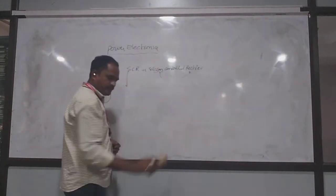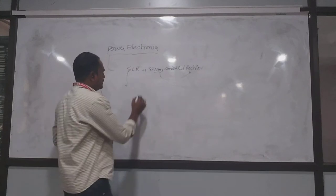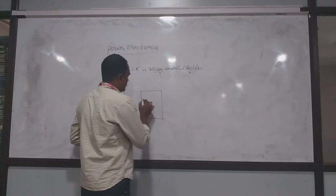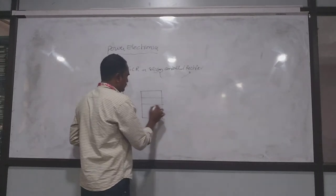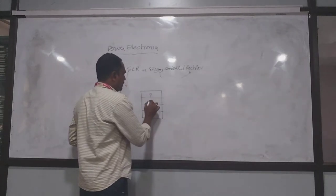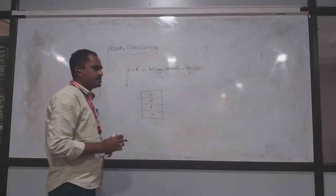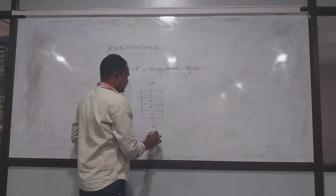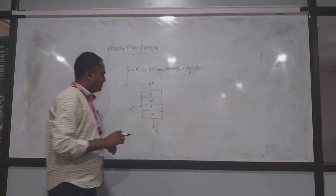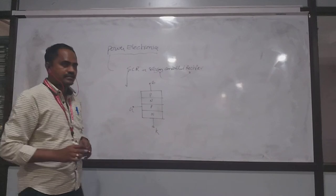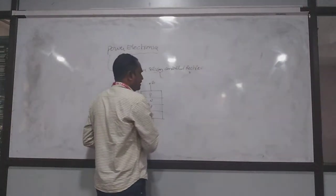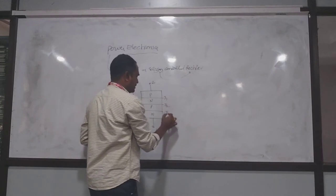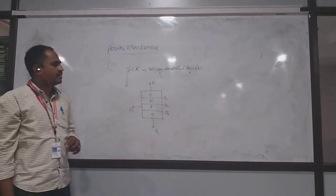The construction has three junctions: J1, J2, and J3. This is the construction of the SCR, which is a four-layer PNPN device with anode, cathode, and gate terminals.